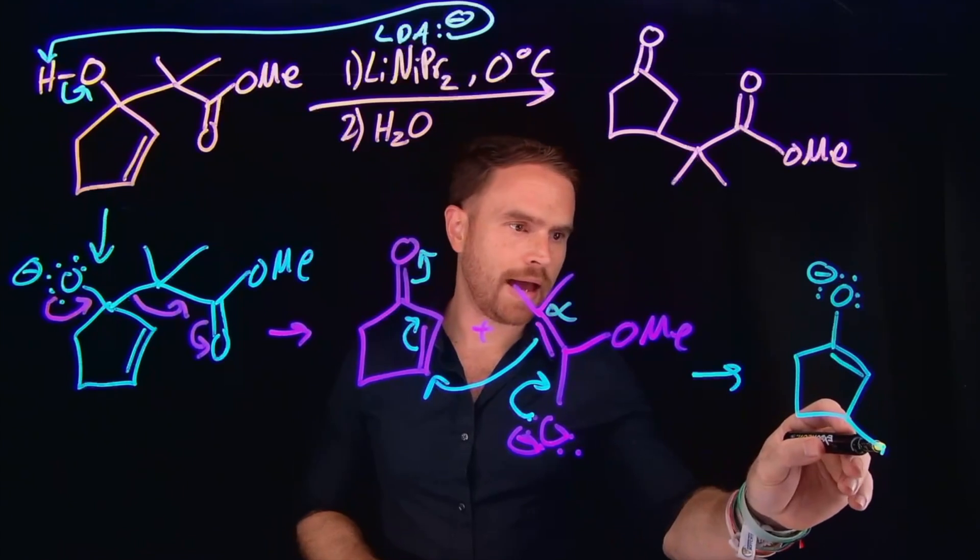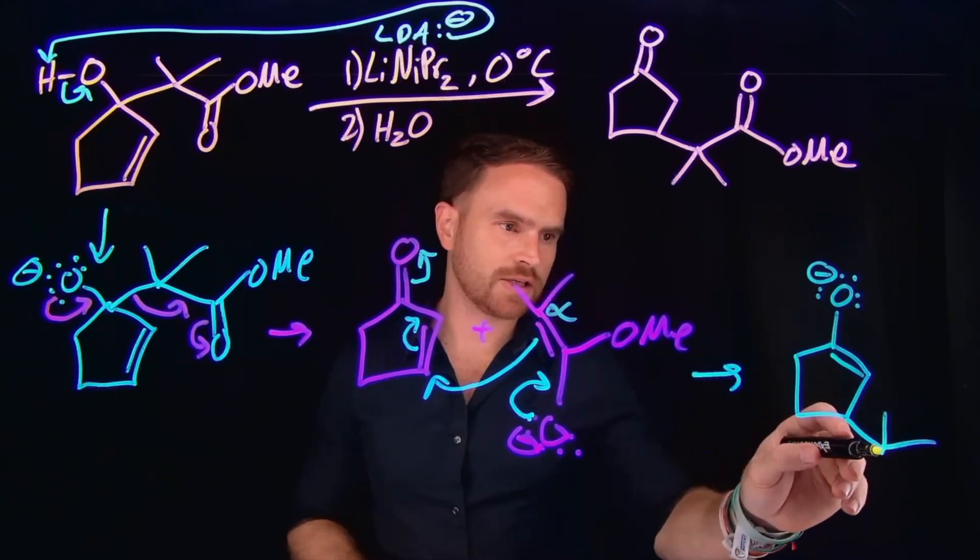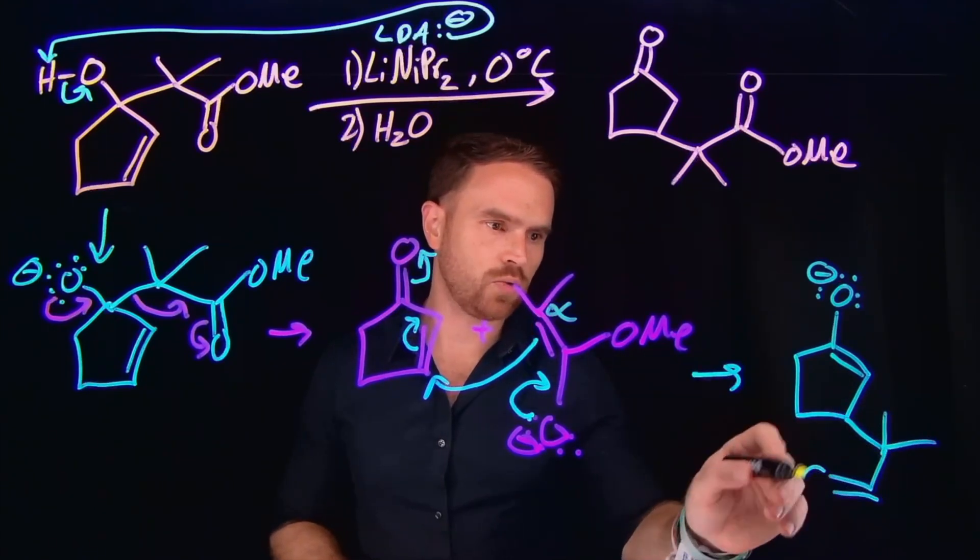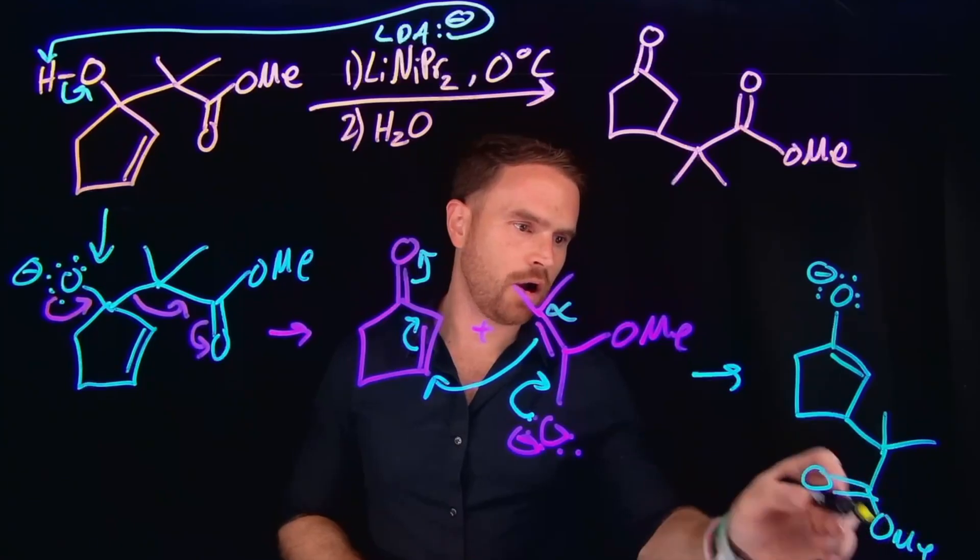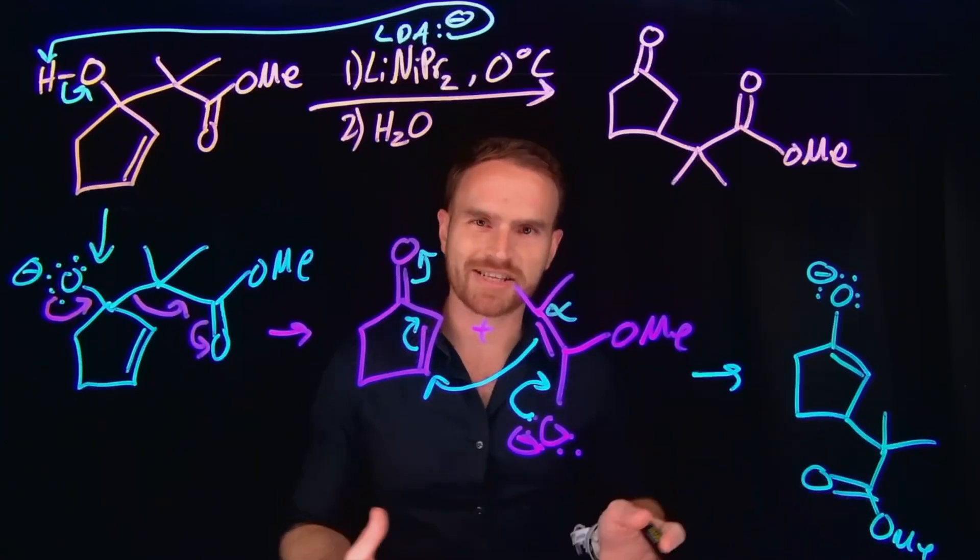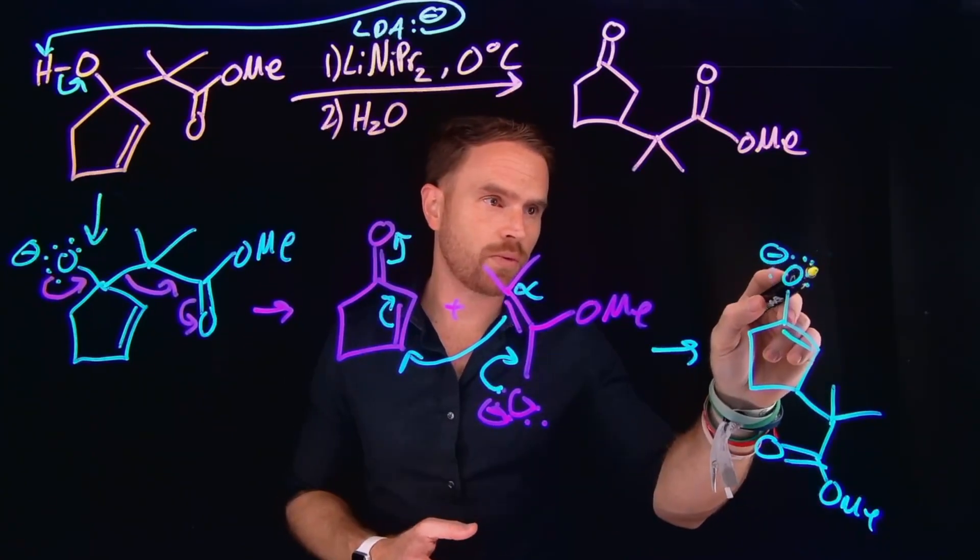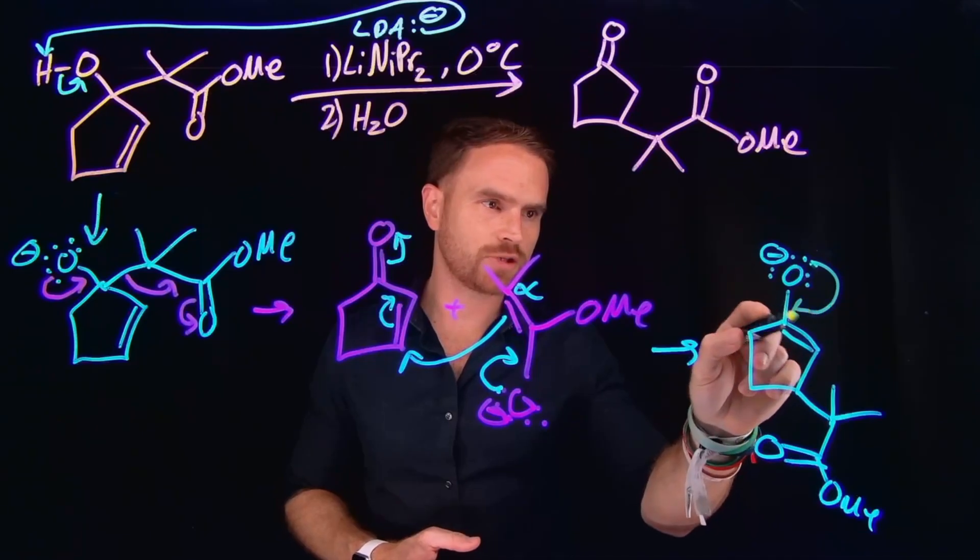So we will have our two methyl groups coming off of this carbon and then the rest of the molecule will be this ester where we have the O-methoxy group as our R group of the ester. And then in order to get our final product, remember these electrons will actually come down to reform our carbonyl carbon.